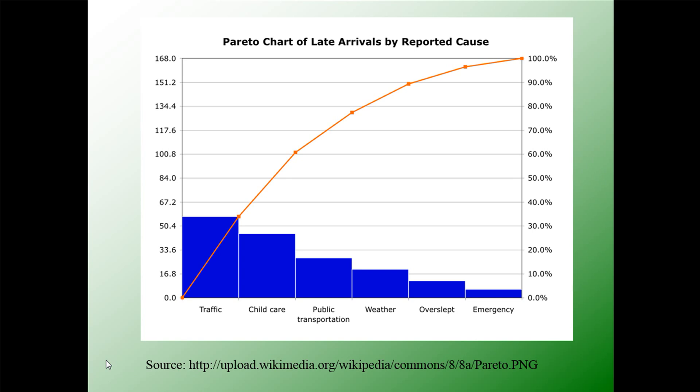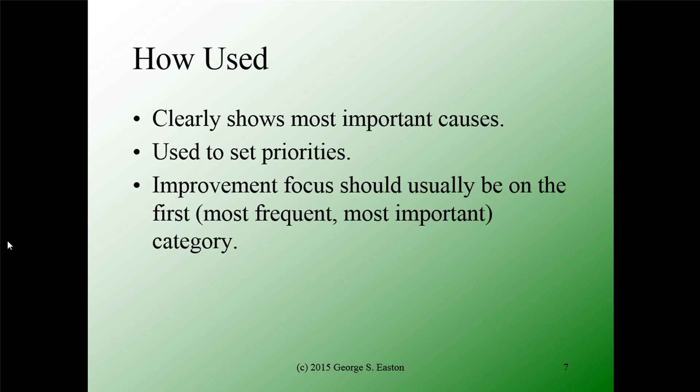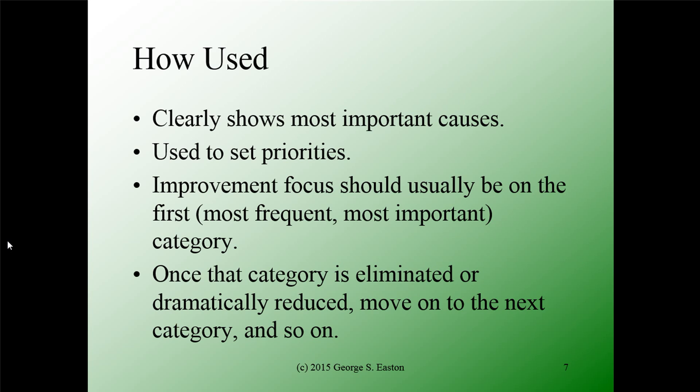This shows you what the Pareto Chart is, and it's an extremely important quality tool. The Pareto Chart is used to clearly show the most important causes and to set priorities. The focus of any improvement or defect reduction effort should usually be on the first category — the most frequent and therefore most important category. Once you've focused on the most important category and it's eliminated or dramatically reduced, the Pareto Principle typically applies to the remaining categories, so you move on to the next most important category.